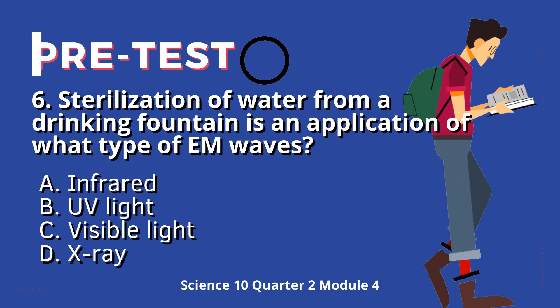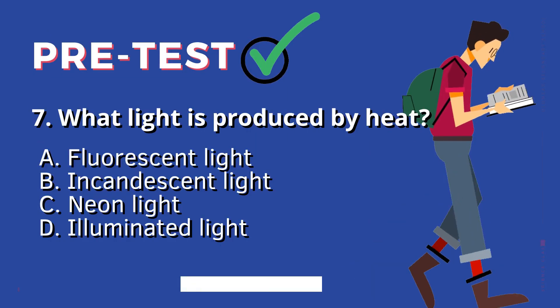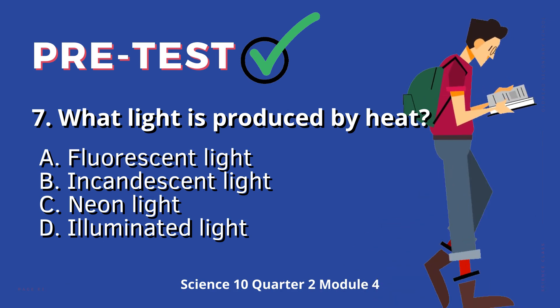Question 7: What light is produced by heat? A. Fluorescent light. B. Incandescent light. C. Neon light. D. Illuminated light.